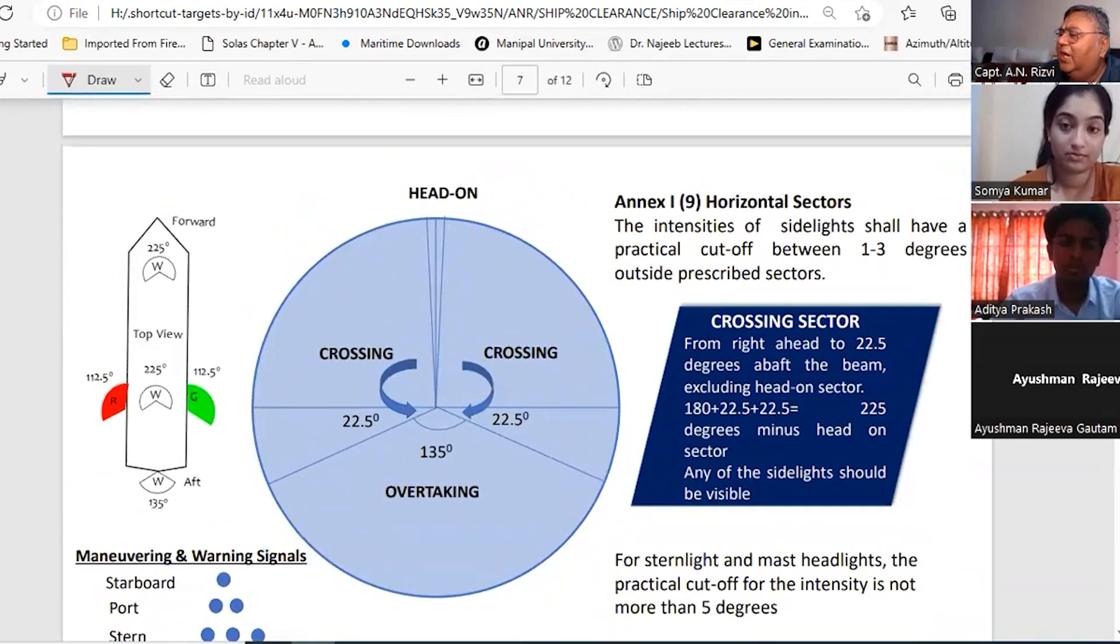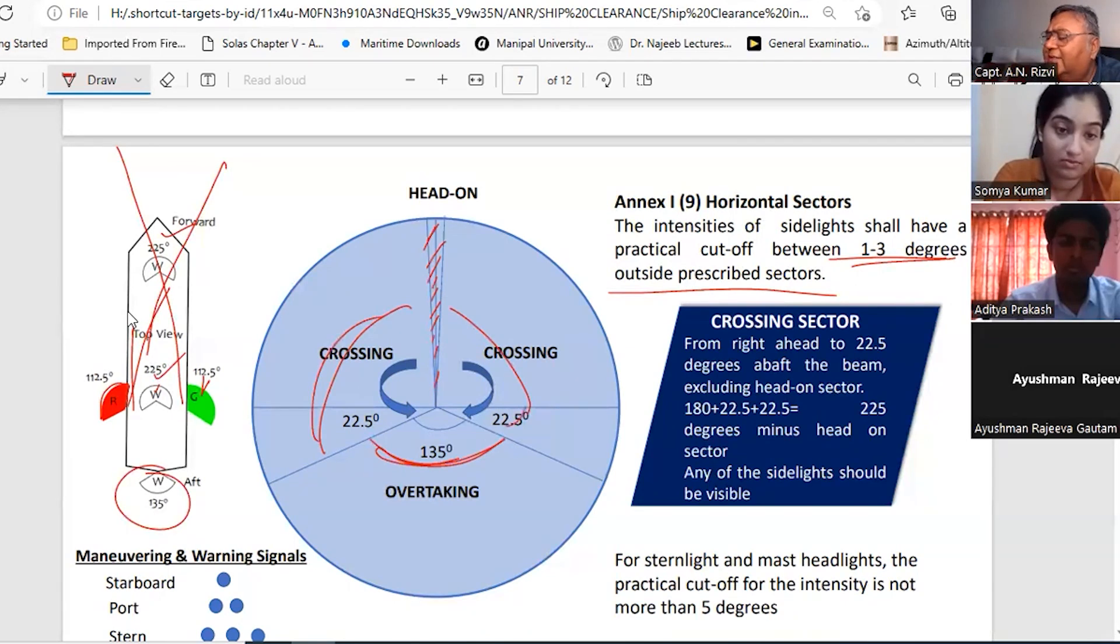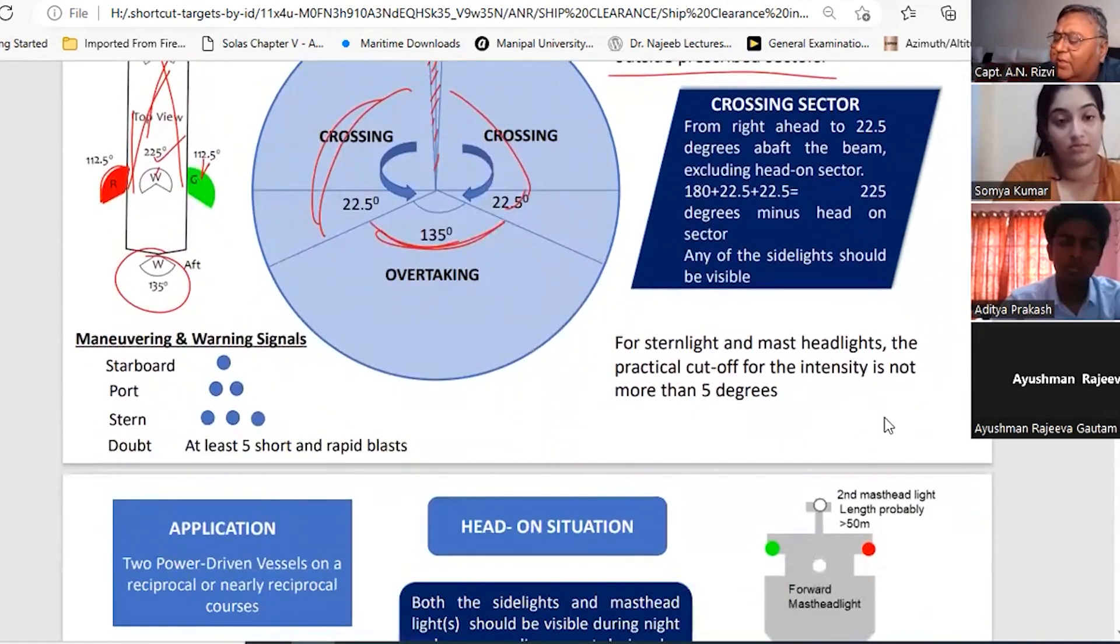Now let's talk about head-on situation. Head-on situation is something if you see these lights - if you can see the side lights, and both the side lights and the masthead light, that is the head-on situation. Actually these lights have the cut-off of 1 to 3 degrees outside the prescribed sector. So 1 to 3 degrees here, 1 to 3 degrees here. So that is the head-on sector. By the way, rest of the thing is crossing, and this is the overtaking sector. So overtaking sector is the sector of a stern light, and rest of the sectors are crossing except the head-on sector. What kind of signals you are supposed to maintain? You are supposed to maintain 1 short blast, 2 short blasts, 3 short blasts - your engines are going astern. And if you are in doubt, at least 5 short rapid blasts.